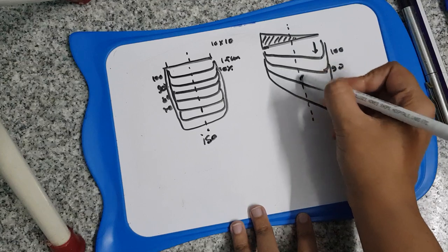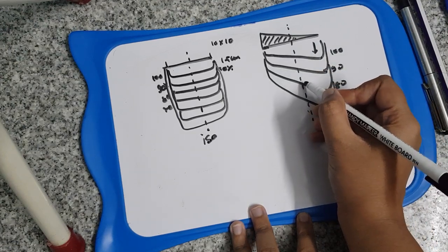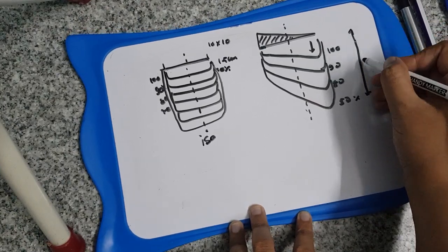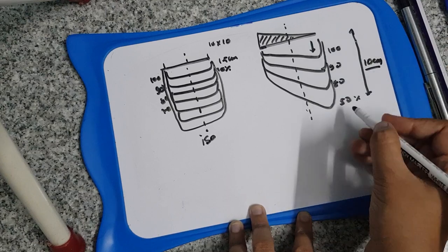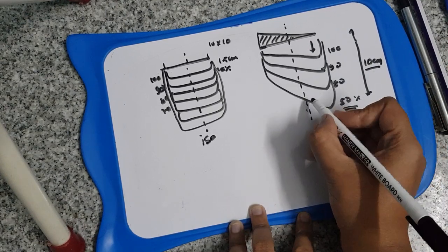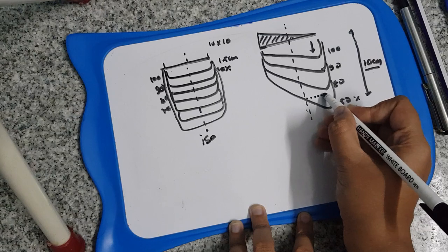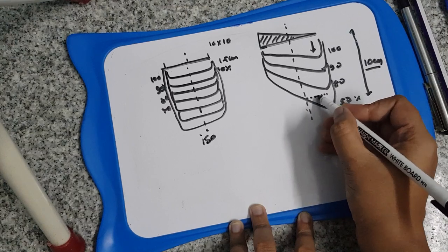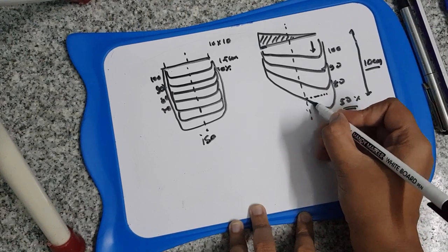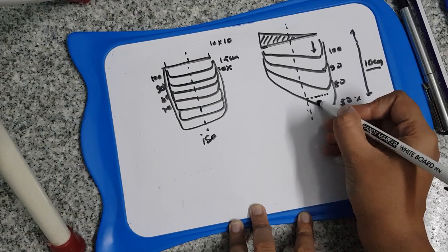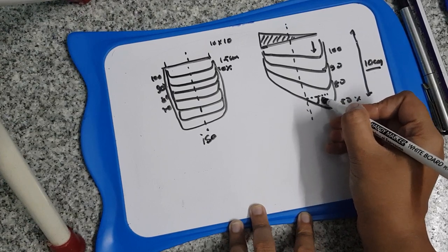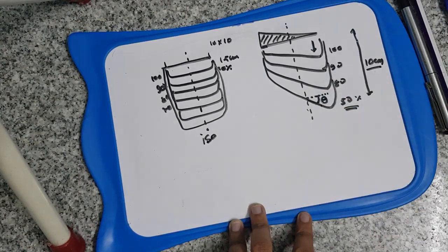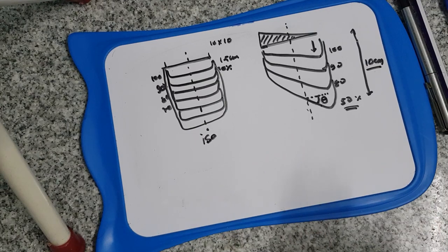The wedge angle is defined like this: at a depth of 10 centimeters — or sometimes the book refers to the 50% isodose curve — you take a horizontal plane. The angle subtended by the isodose curve to the horizontal at that depth is the wedge angle.